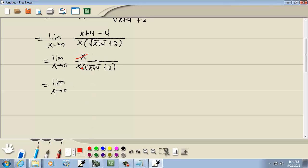And now we see these x will cancel. The reason it will cancel is because this down below is x times this. So if it's multiplication, you can cancel the x's. So we've got 1 over square root of x plus 4 plus 2.